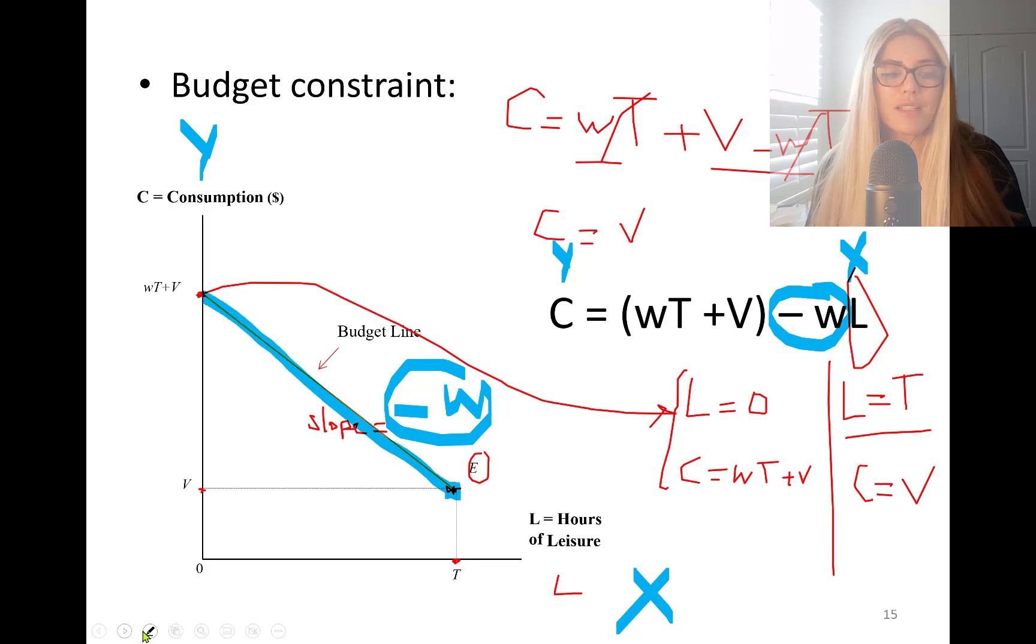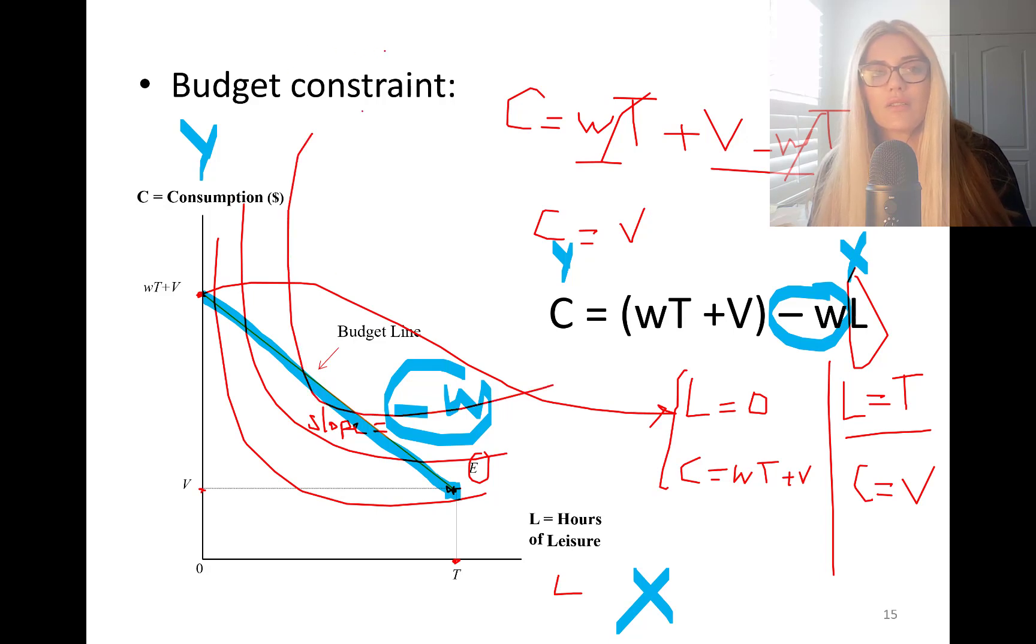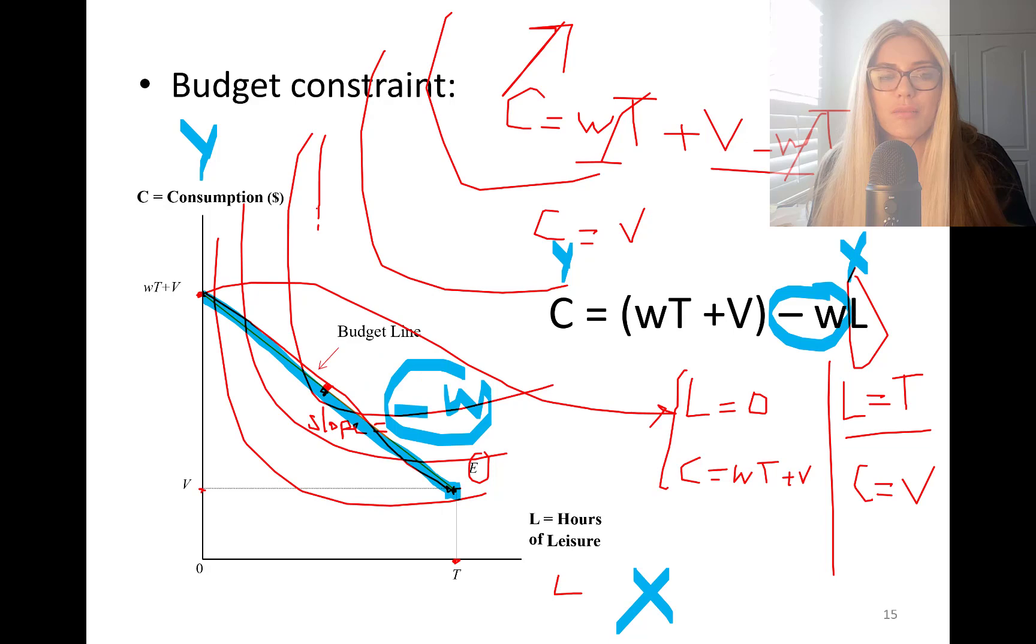So next step will be, I am trying to go to the highest indifference curve. I am this person. I am trying to go to the highest indifference curve. I want to go to a really high indifference curve. If I can, I would go to the one all the way up here. However, this budget line constraint is telling you stop here.